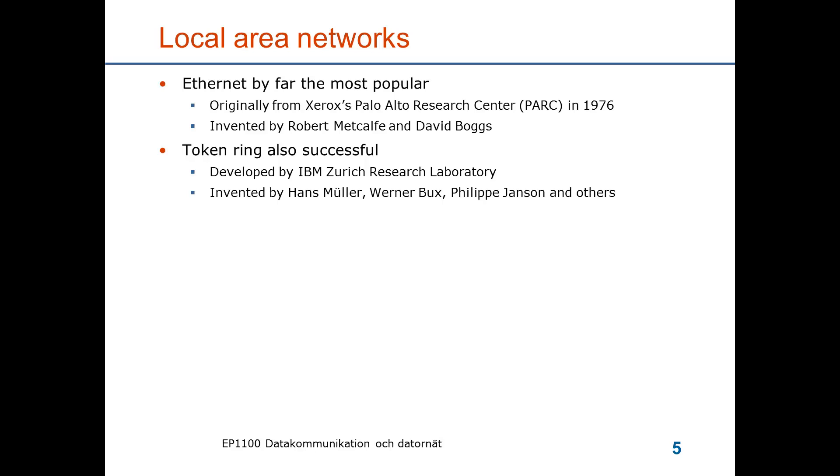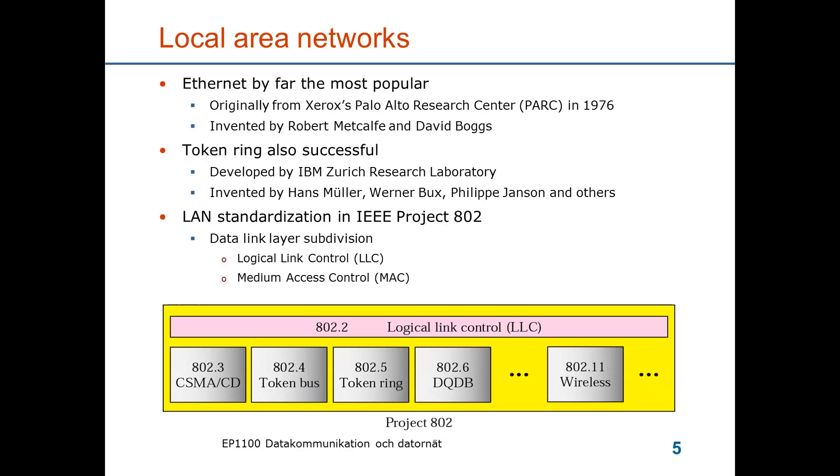These two and more other types of local area networks have been standardized in the IEEE project 802. The standard has two divisions. There is a logical link control, which covers multiple access control mechanisms, and then there's individual access control protocols specified. You see here 802.3, which is the CSMA CD, 802.4, which is token bus, and 802.5, token ring, coming out of the IBM work. And we see also 802.11, the wireless LAN that we will cover in the next part of this teaching module.